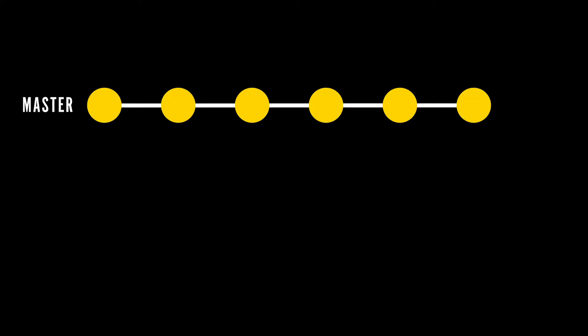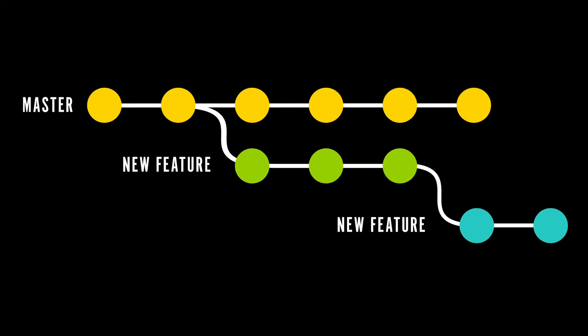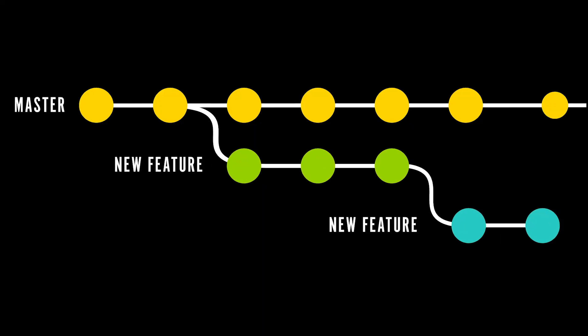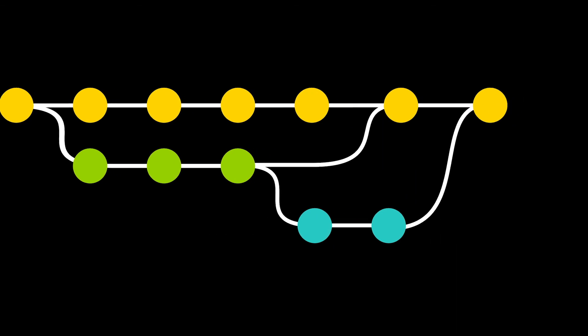Sometimes you'll work on a feature that builds off of itself and you don't necessarily want to wait until that code gets merged into master before you start working on the next feature. You can fork off of your new branch — you just need to make a note so that these branches get merged back into master in the correct order.